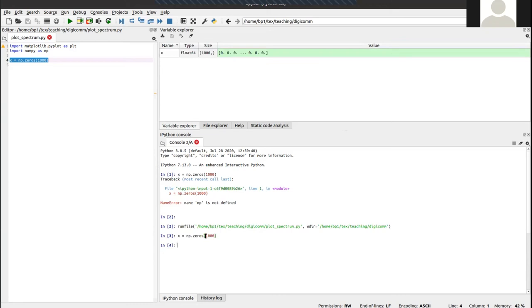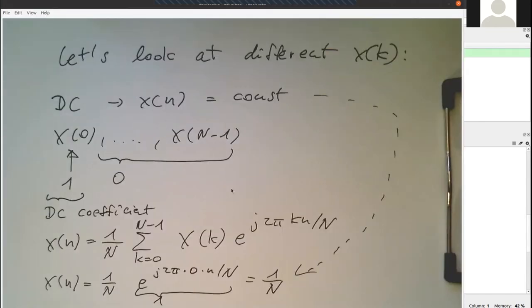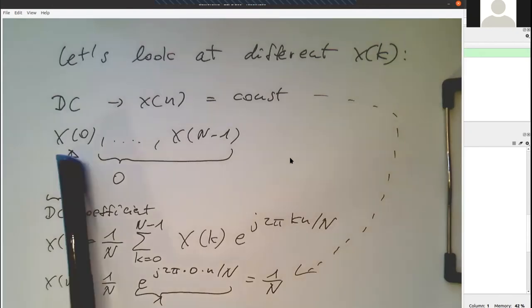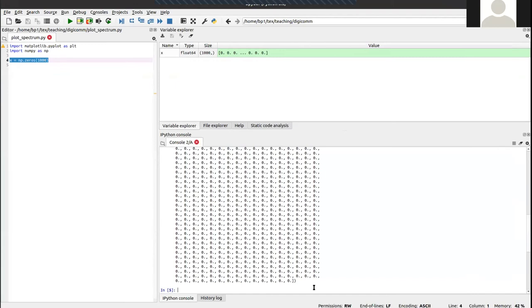So then we have here an array of, in this x here, just zeros. And so what we, remember what we want to do is, we would like to set this very first coefficient here to 1 and leave the rest just to 0. So let's do that so that I set the very first coefficient to 1.